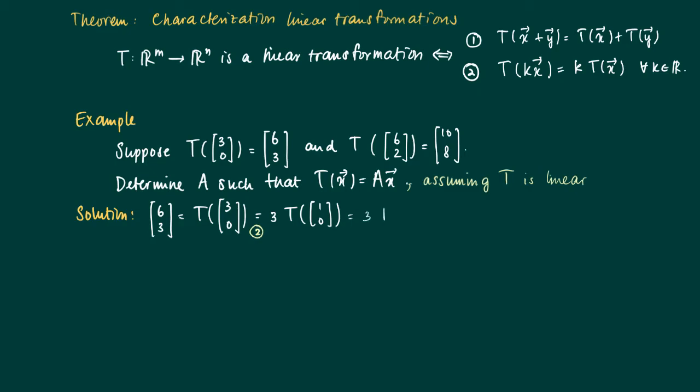Here we use the second property because [3,0] is 3 times [1,0]. So we have 3 times T of E1, the first natural unit vector.